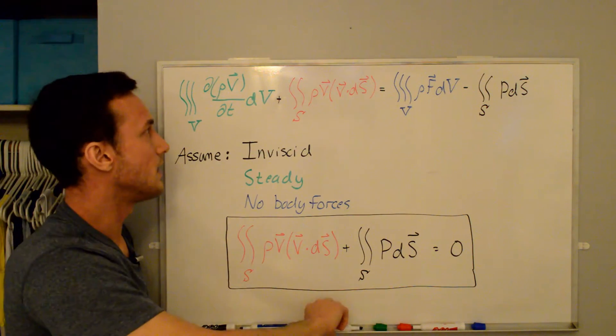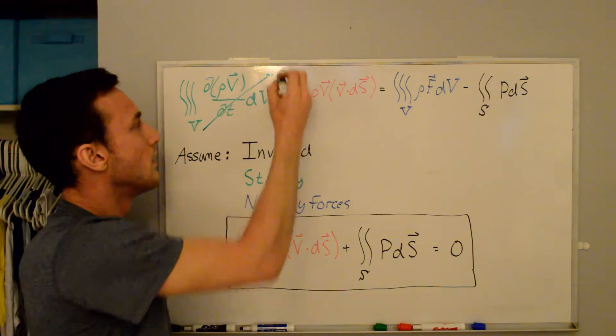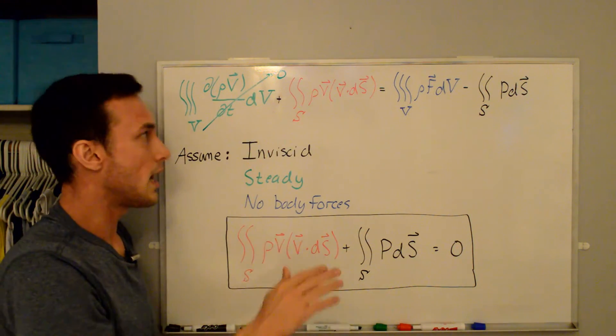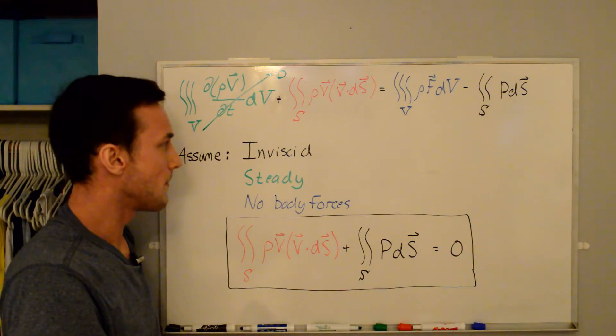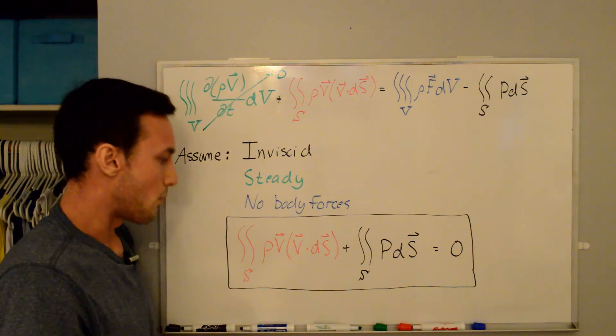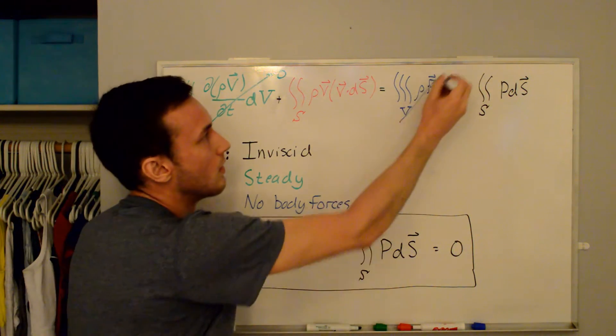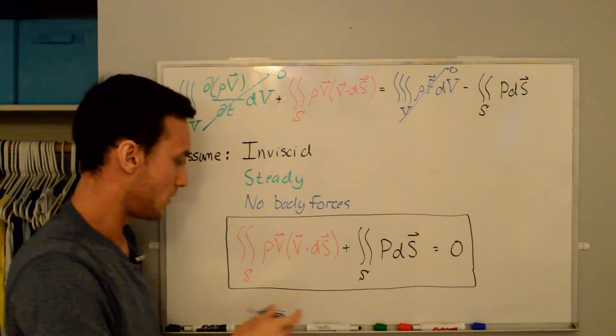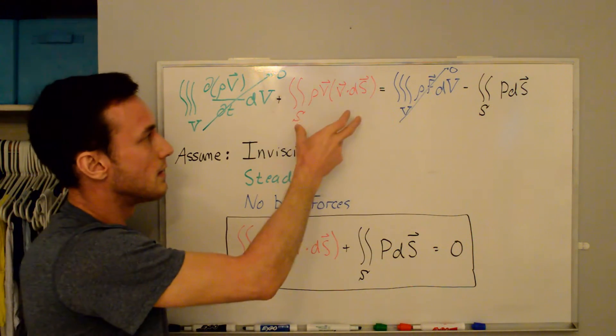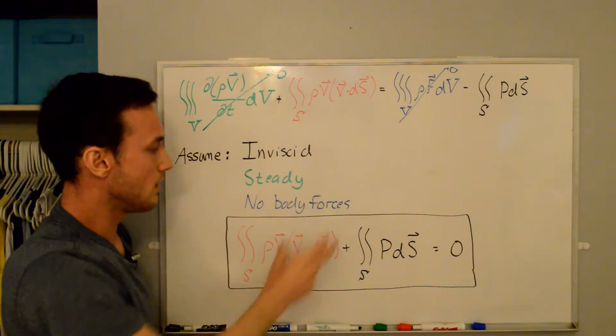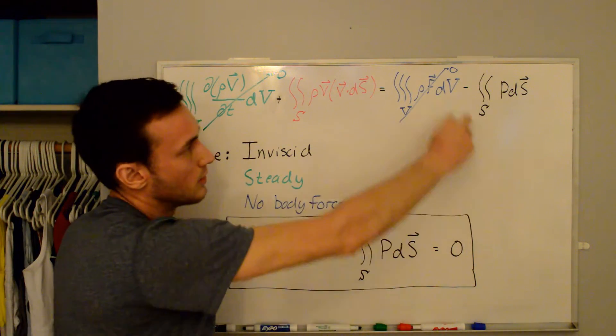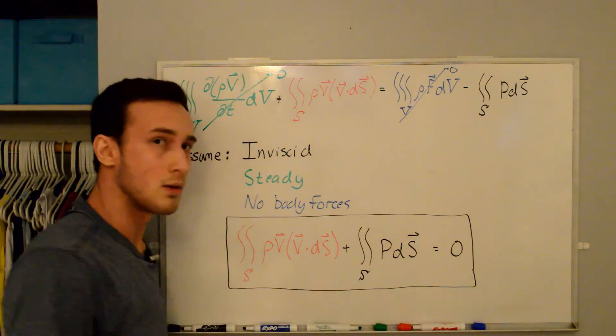The second assumption that we'll make is that it's steady so we can get rid of this term here. Nothing's changing with time, so ddt is equal to zero. And then the third assumption is that there's no body forces so this term goes to zero. And what we're left with is the convective term here and then the pressure term which I've just moved to this side and set everything equal to zero.